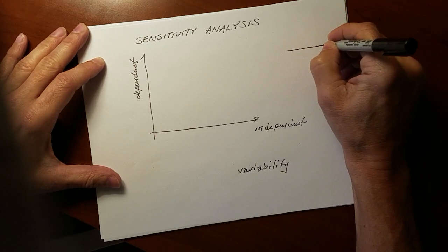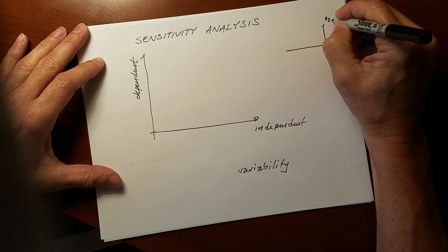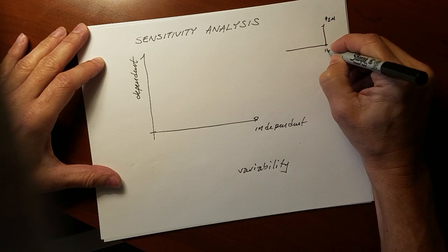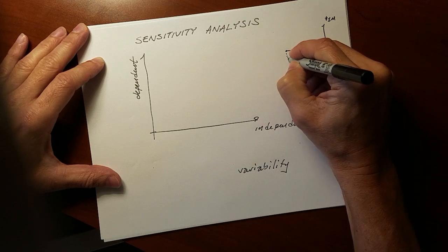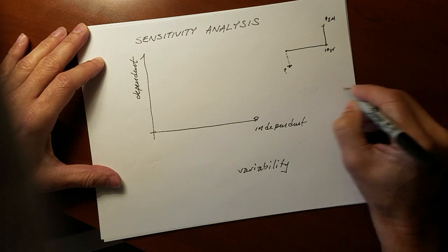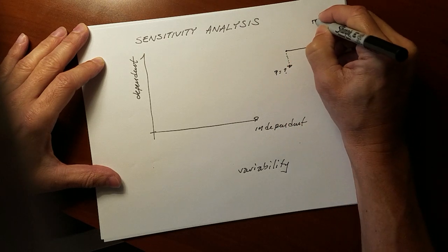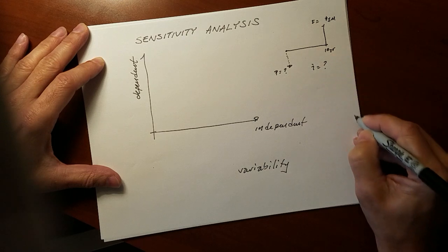For example, we might want to explore the present worth of a 1 million dollar promise to pay in 10 years. And we want to know how much is that 1 million dollar payment in 10 years worth today. One of the important parameters that we're going to need to know is the discount rate.